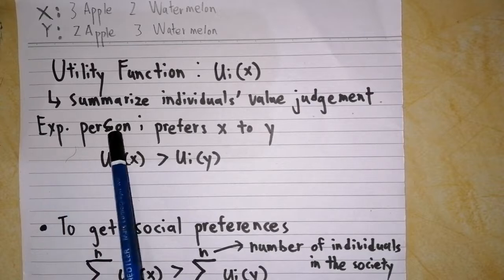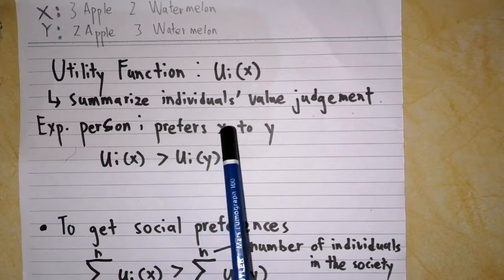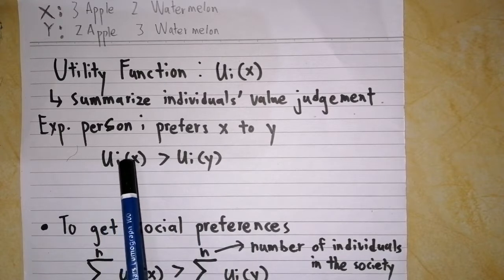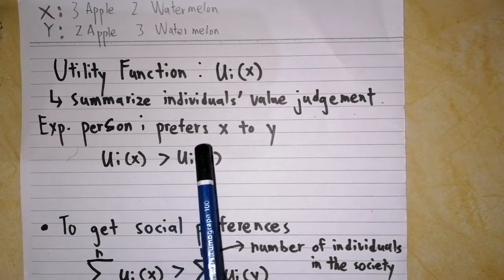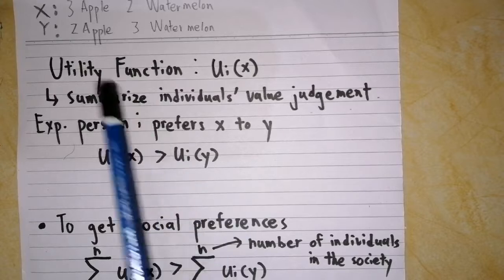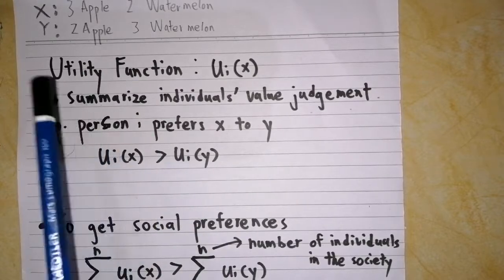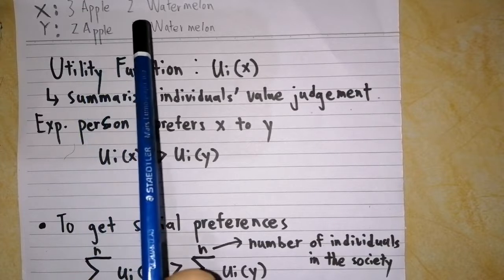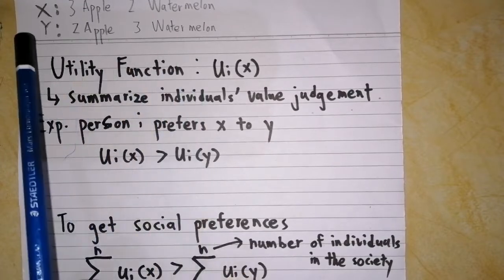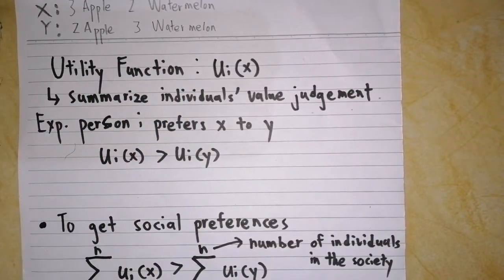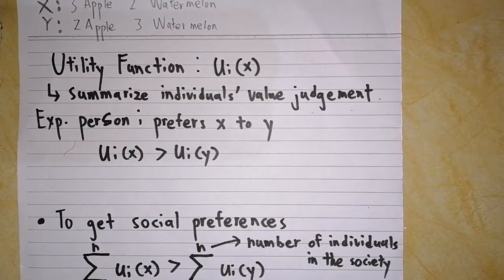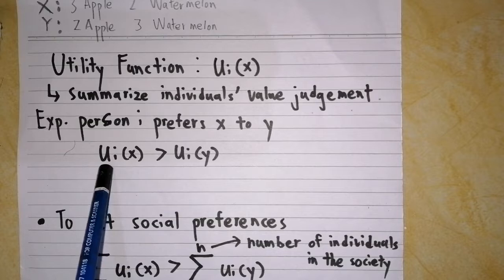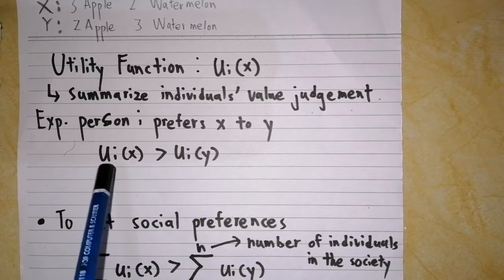For example, when we say person i prefers allocation X to Y, it means the utility function of allocation X is greater than the utility function of Y, U_i(X) > U_i(Y). So in our case, it means the person prefers allocation X consisting of three apples and two watermelons instead of allocation Y. However, we must remember that this function only depends on one individual instead of the society.